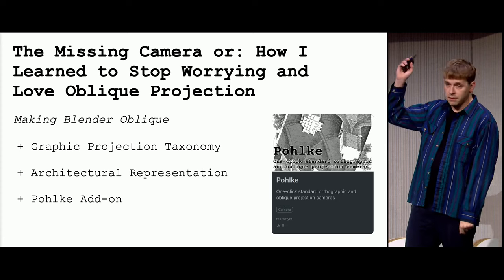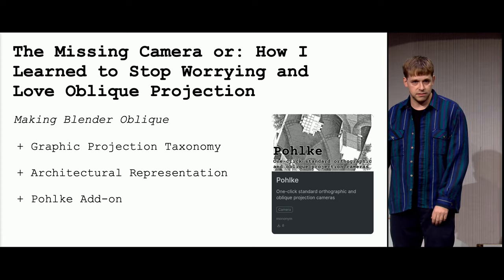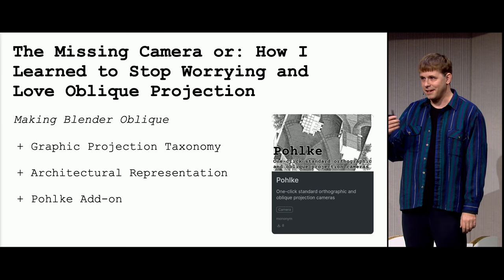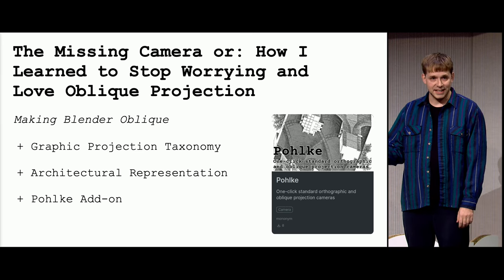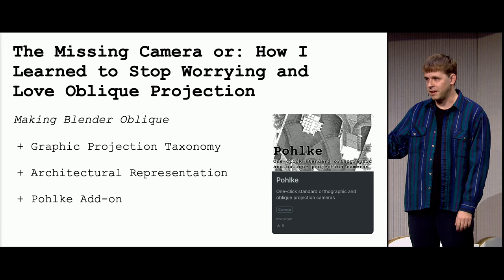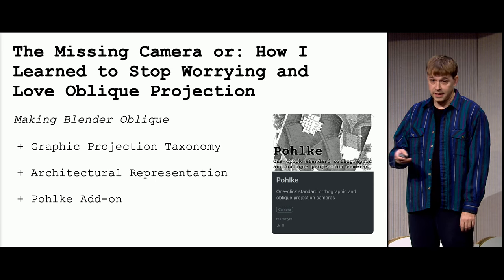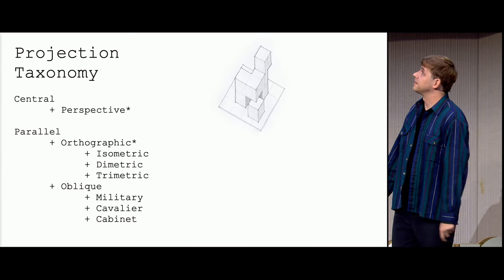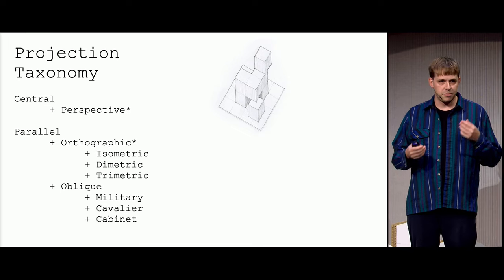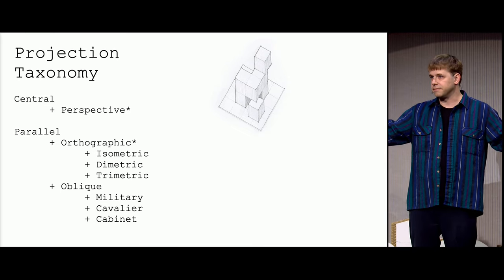To do that, we will look at what projections exist, define them, so we can narrow down what's oblique. Then we will have, like, an image essay through representations of architecture from art history, and then we will look into the add-on. First, projection is basically solving the problem of representing a 3D object on the 2D surface.